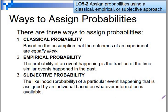There are three ways to assign probability: classical probability, empirical probability, and subjective probability. For classical probability, the key word is equally likely. Empirical probability is the fraction of the time a similar event has happened in the past. Subjective probability is the likelihood assigned by an individual based on whatever information is available.